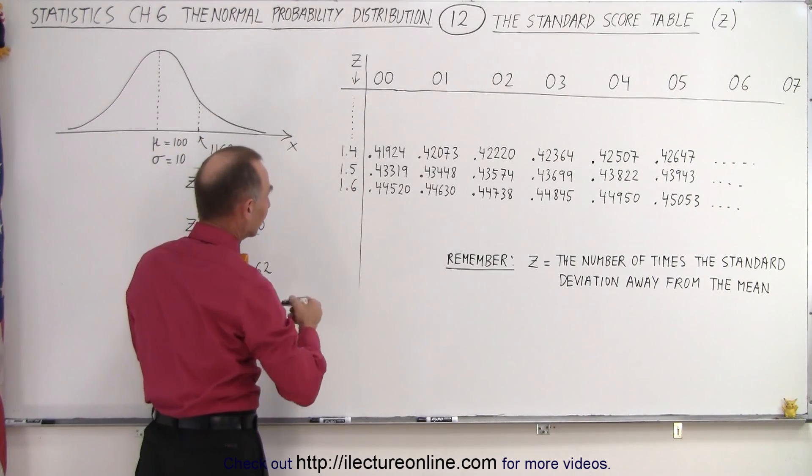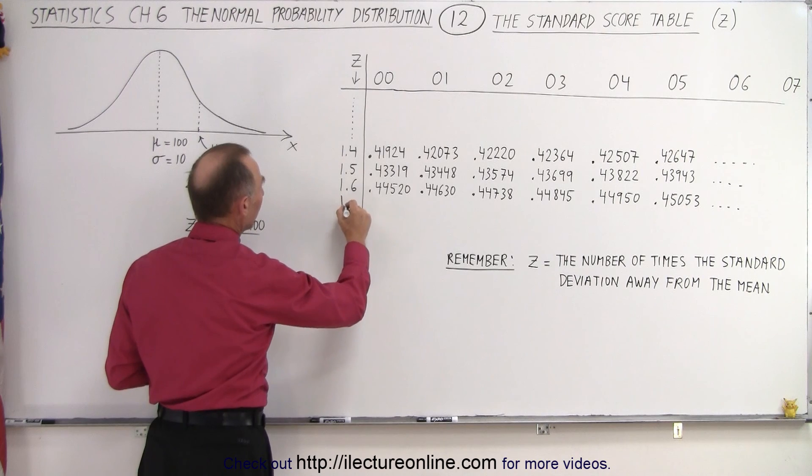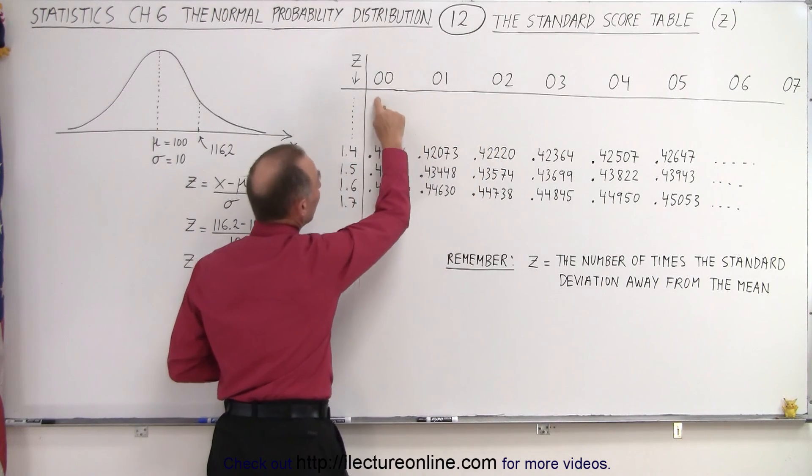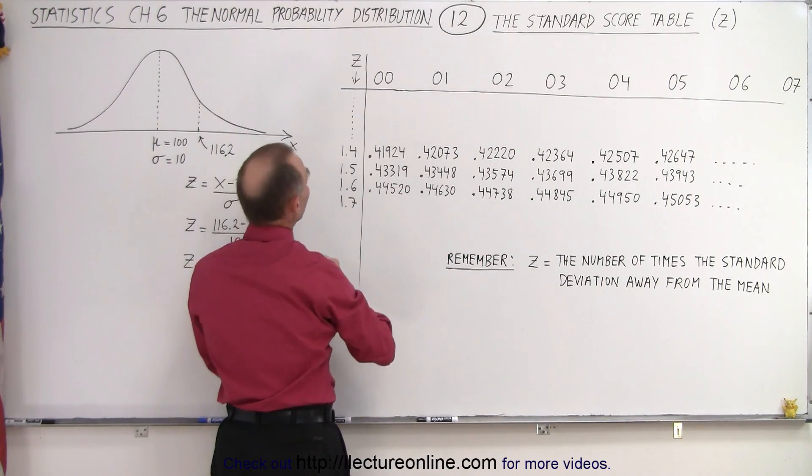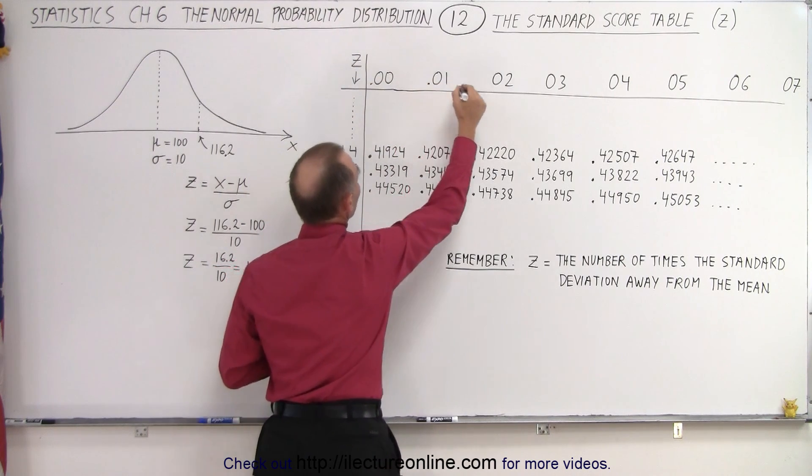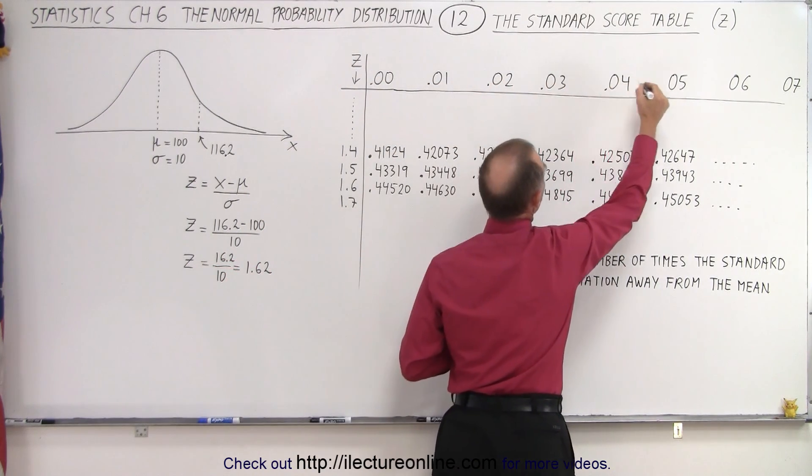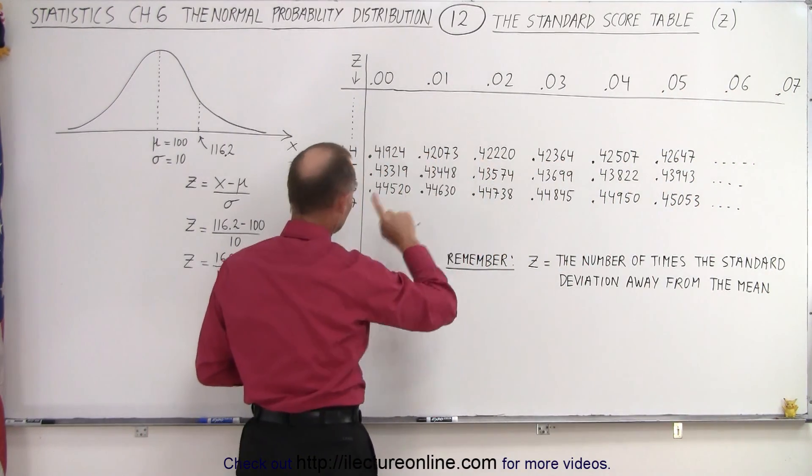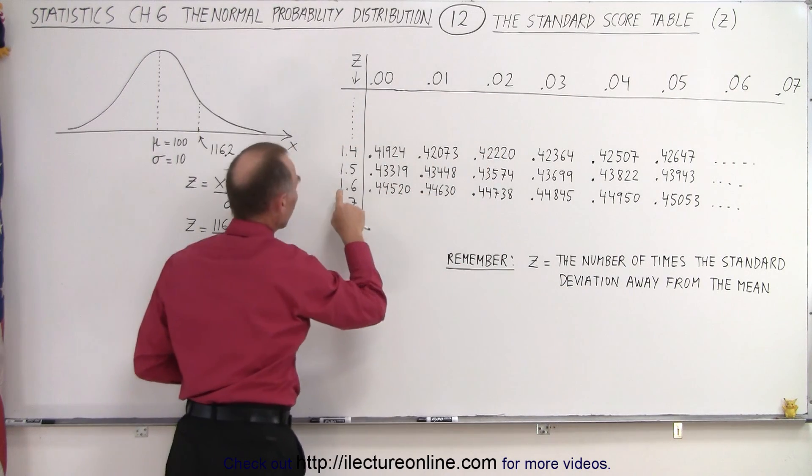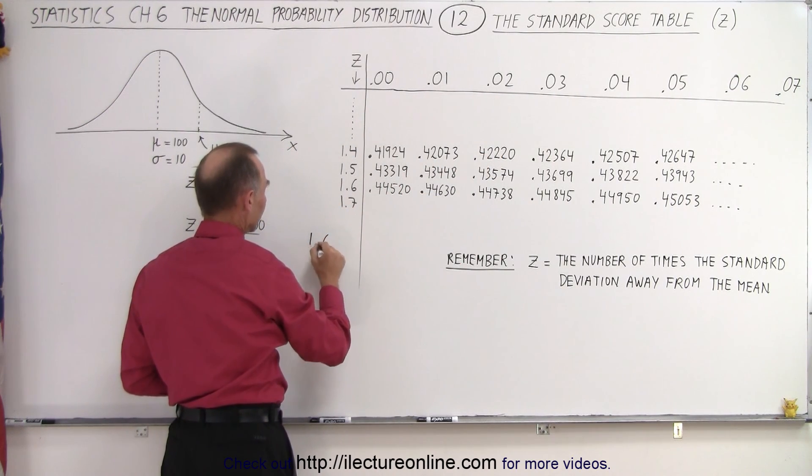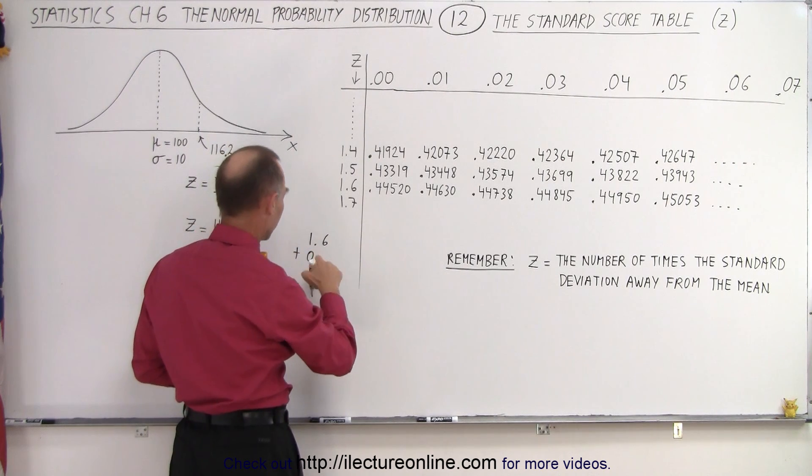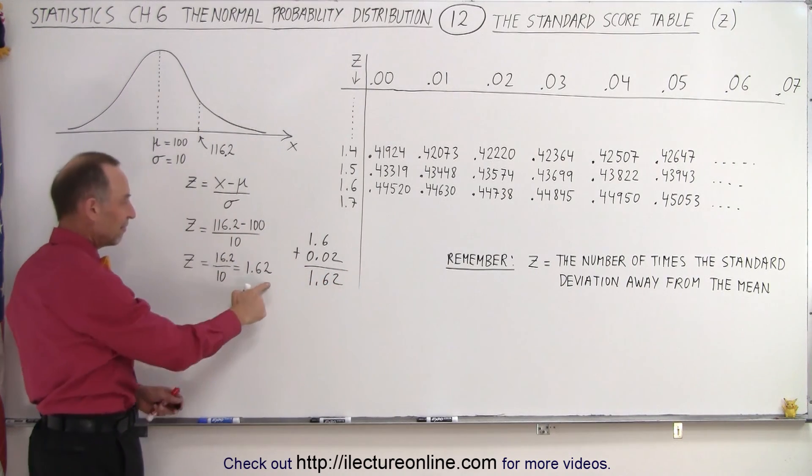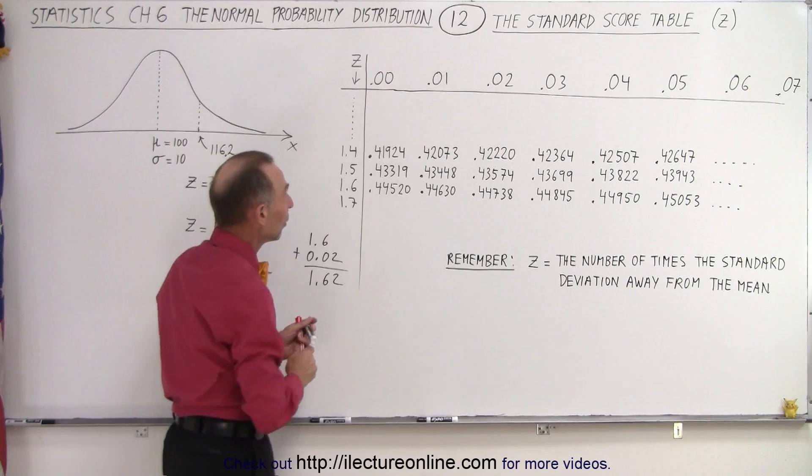So how do we find 1.62? Well that's why we have these horizontal numbers. We add this number to this number. And essentially we probably should put little decimal places in front of those numbers like this. So essentially what we're doing is we're going to add in this case 0.02 to 1.6, because 1.6 plus 0.02 that gives us 1.62, which is the Z value that we have over here.